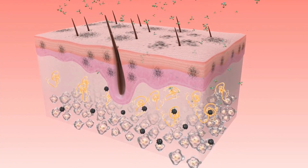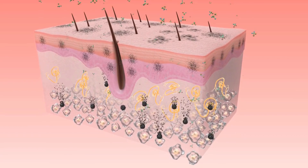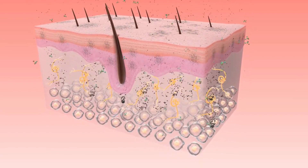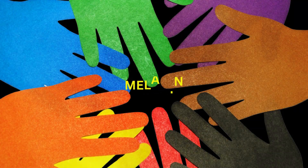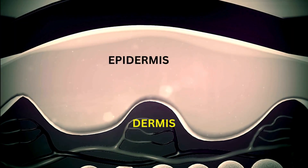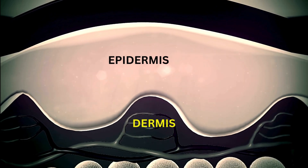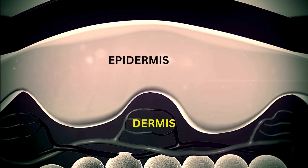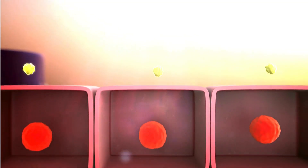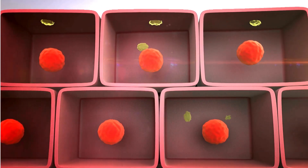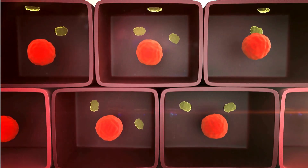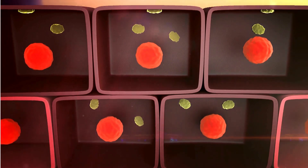Melanocytes are specialized cells located in the stratum basale of the epidermis. They produce the pigment melanin, which plays a crucial role in determining skin color and provides protection against the harmful effects of ultraviolet (UV) radiation from the sun. Melanin is transferred to neighboring keratinocytes to contribute to skin pigmentation and help absorb and dissipate UV radiation.